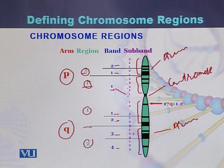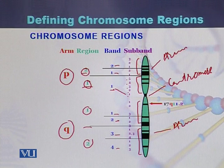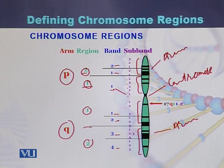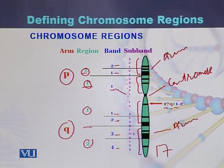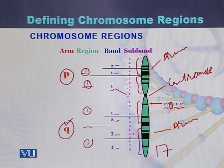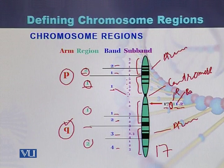If a gene is located on chromosome 17Q11.2, we can identify its position as follows: 17 refers to the chromosome, Q refers to the arm, the first 1 refers to the region, the second 1 refers to the band, and 2 refers to the sub-band. In this way we can identify where a gene is located.